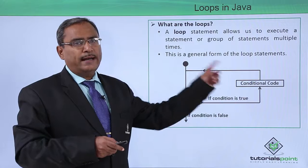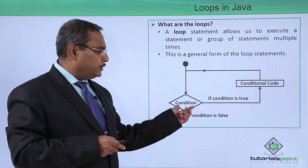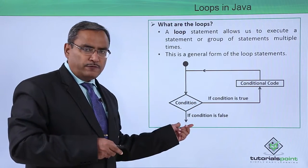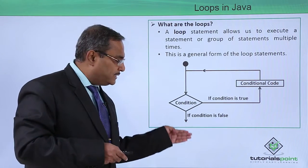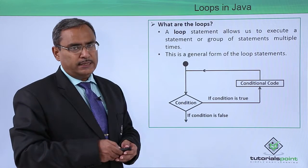But when that condition is false, it will exit the loop. The control will come out and continue executing the next statements in the program.